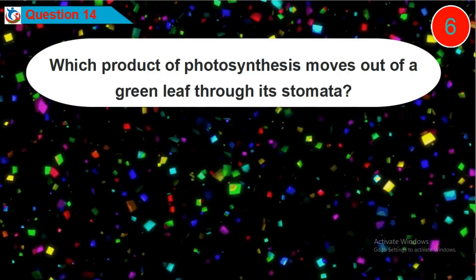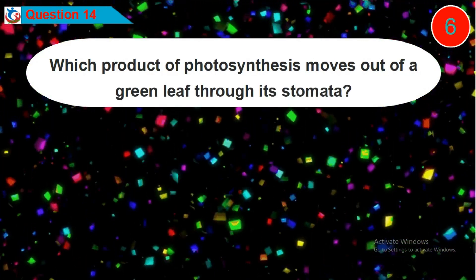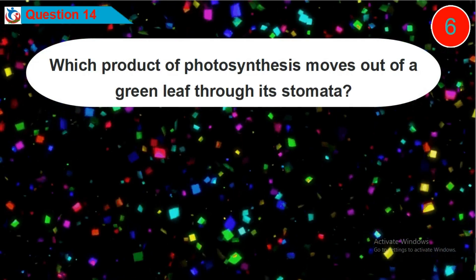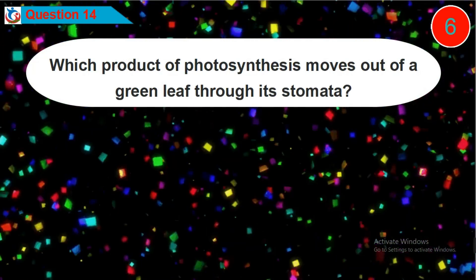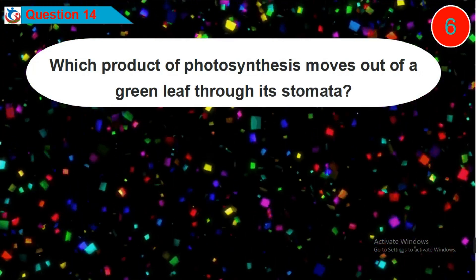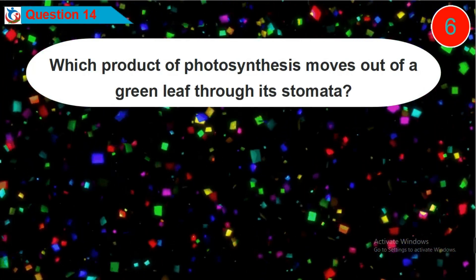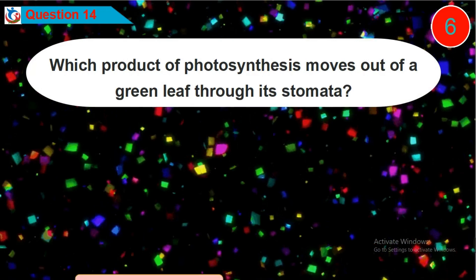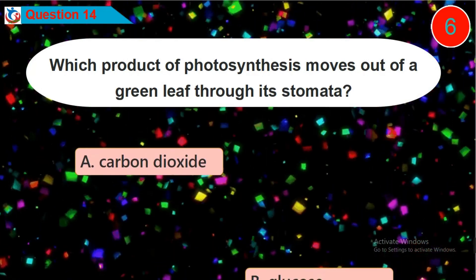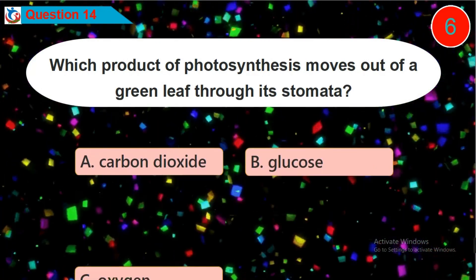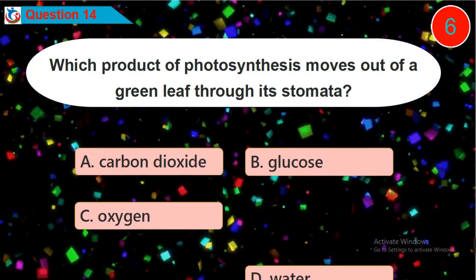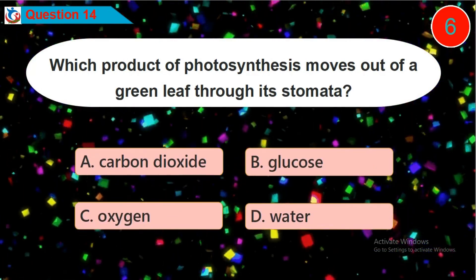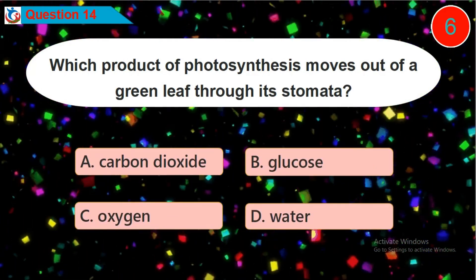Question fourteen: which product of photosynthesis moves out of a green leaf through its stomata? Is it option A, B, C, or D?